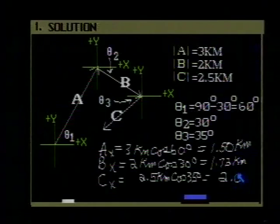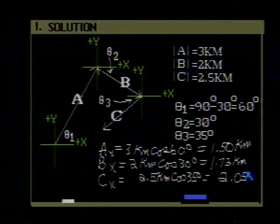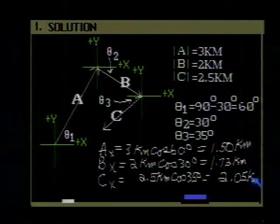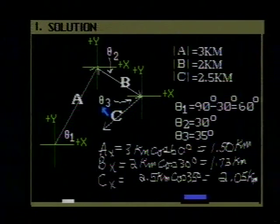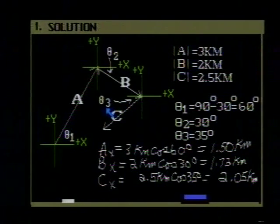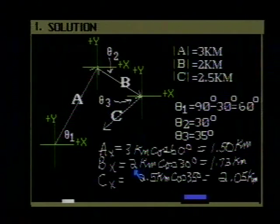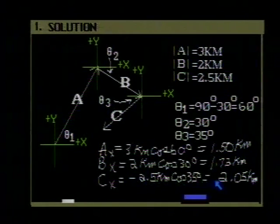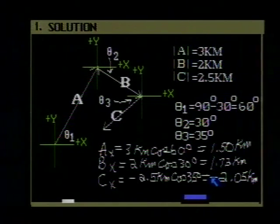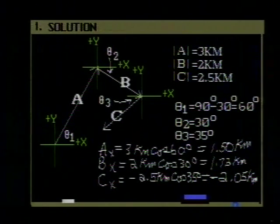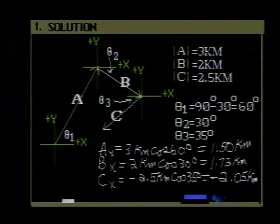And now we want to be a little careful here. This component is in the direction that would be the negative direction on the x-axis. So we're going to make this component negative. So negative 2.05 kilometers is then the component in the x direction of C.